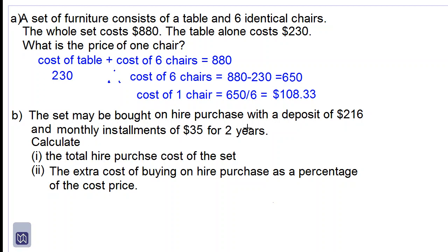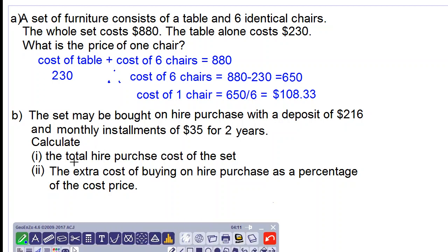The set may be bought on hire purchase with a deposit of $216 and monthly installments of $35 for two years. Calculate the total hire purchase cost of the set.